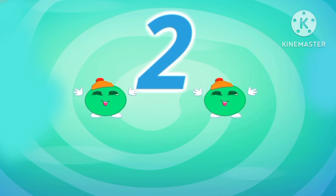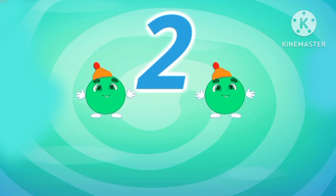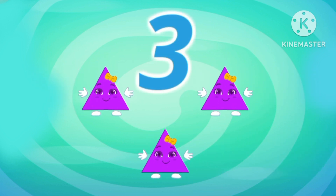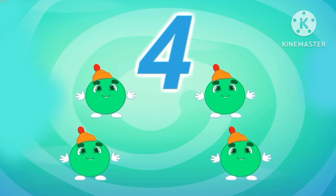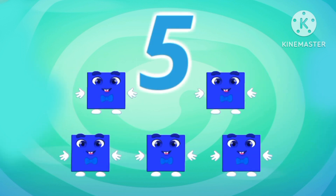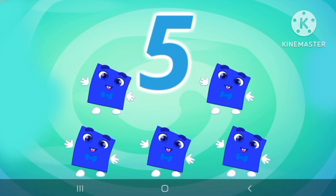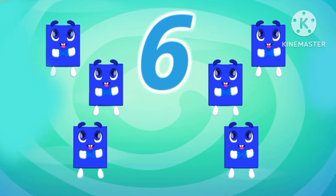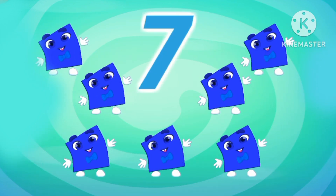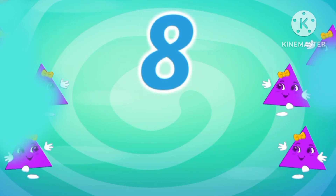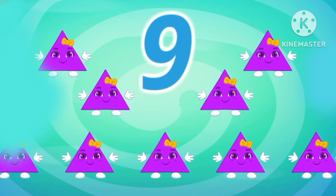One. One rectangle. Two. Two circles. Three. Three triangles. Four. Four circles. Five. Five squares. Six. Six squares. Seven. Seven squares. Eight. Eight triangles. Nine. Nine triangles.